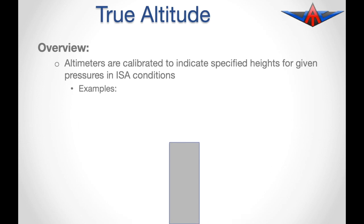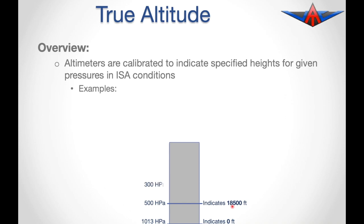Altimeters are calibrated to indicate specified heights for given pressures under International Standard Atmospheric Conditions. For example, at sea level the altimeter is calibrated to indicate zero feet when the pressure is 1013 hectopascals. Pressure reduces as you go up the column — by 18,500 feet the pressure has dropped to 500 hectopascals, so the altimeter indicates 18,500 feet. When the pressure is 300 hectopascals, it will indicate about 30,000 feet, and so forth.